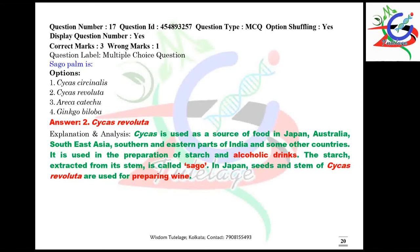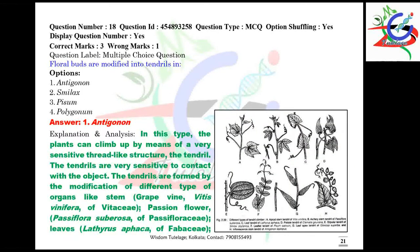Question number seventeen: the sago palm — among the different species of Cycas, the sago palm basically refers to the species Cycas revoluta. It is used to produce an alcoholic drink by Japanese persons in their country. Question number eighteen: floral buds are modified into tendrils in the case of Antigonon. Different types of tendril modifications are given here for further reference.